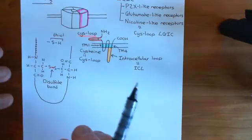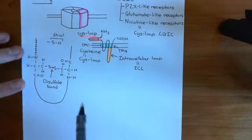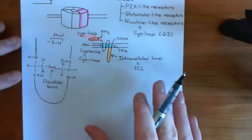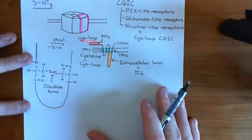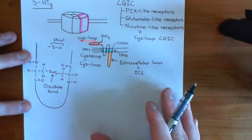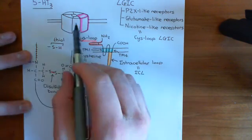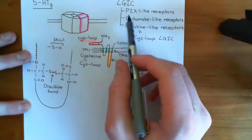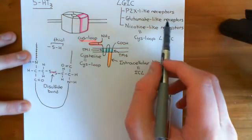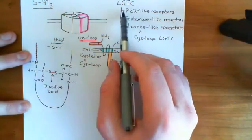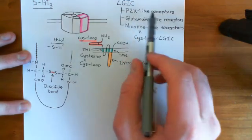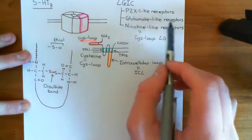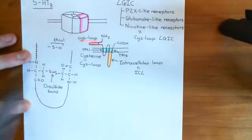This goes far beyond just the 5-HT3 receptors, but we're looking at it in view of the 5-HT3 receptors. This sort of structure does not apply for the glutamate-like receptors or the P2X-like receptors — they have very different structures.